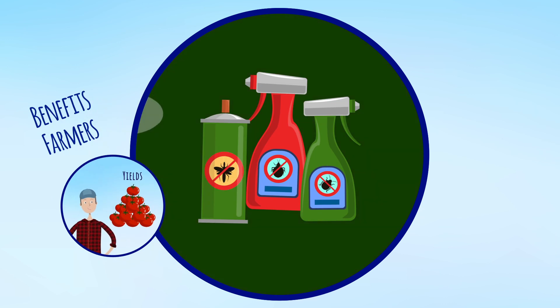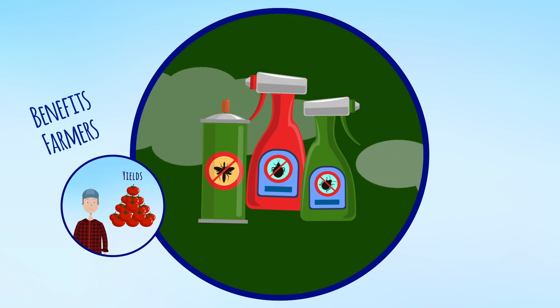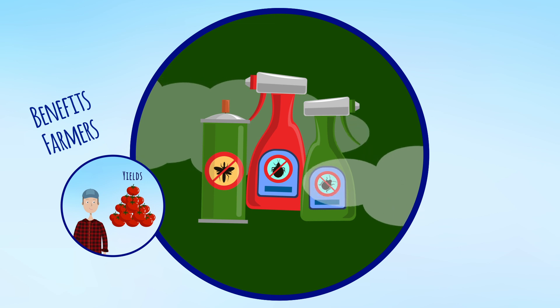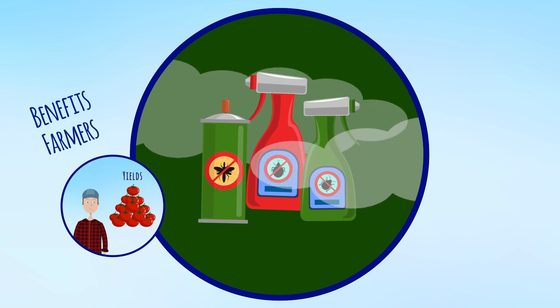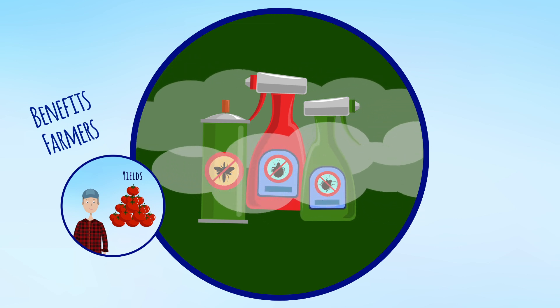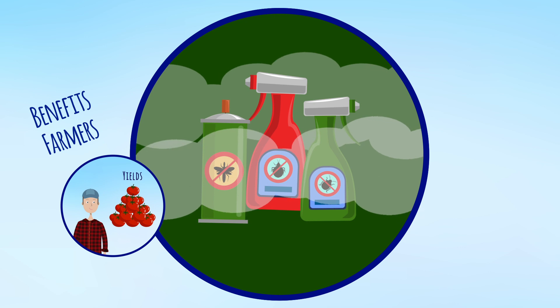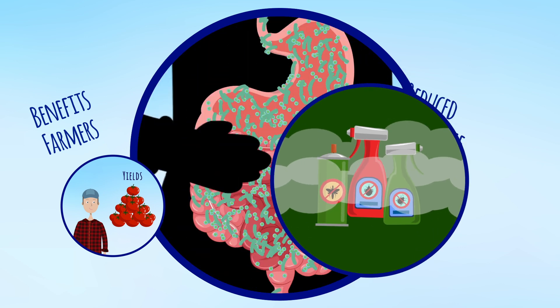According to the UN, pesticides are largely to blame for the decimation of insect populations by approximately 25% per decade over the last 30 years. Bird populations are also crashing as a consequence.